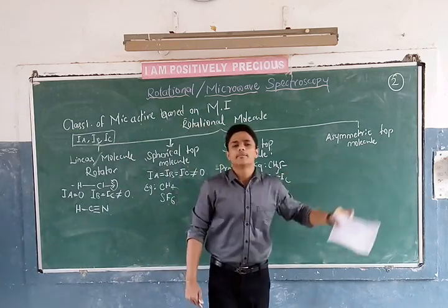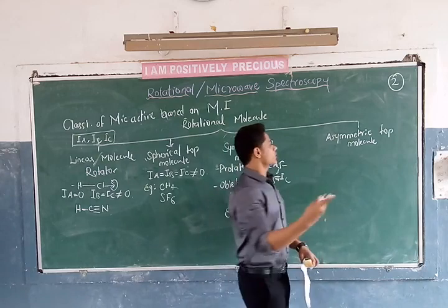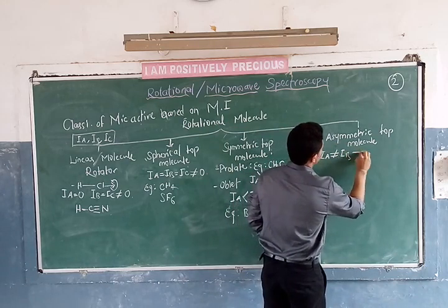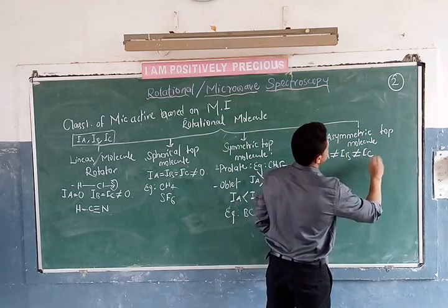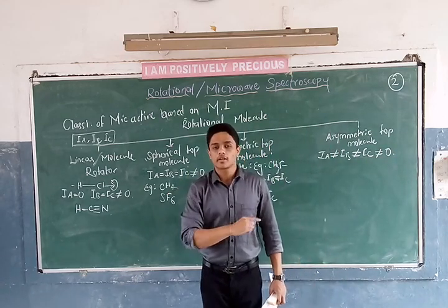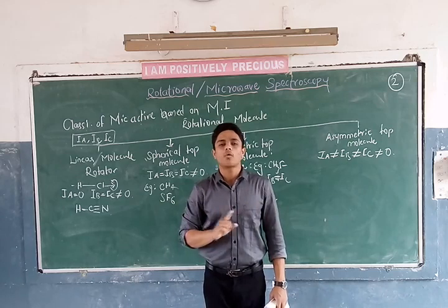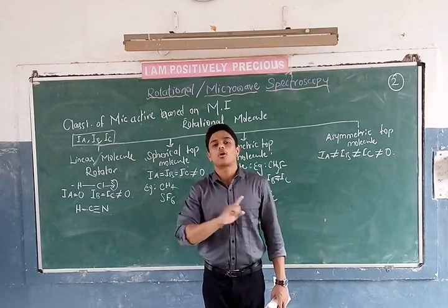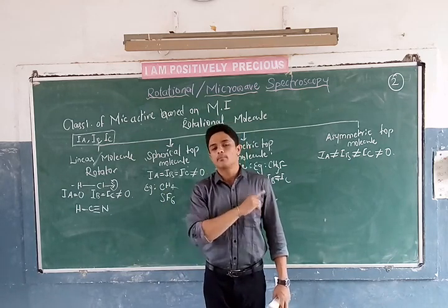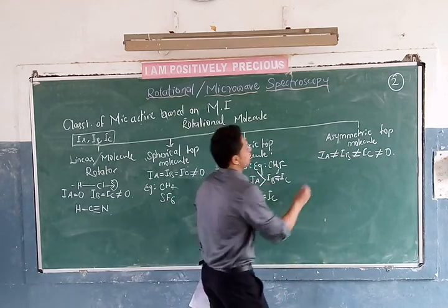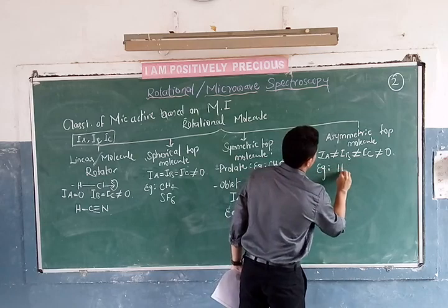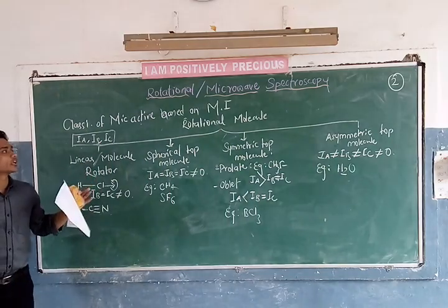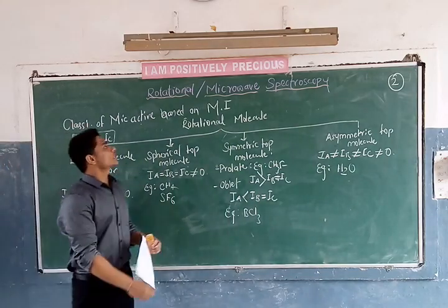Lastly, we are left with asymmetrical top molecules. For asymmetry: Ia is not equal to Ib, Ib is not equal to Ic, and all three are not equal to zero. The movement of inertia along x-axis, y-axis, and z-axis are all different, but all have specific non-zero values. The example for this kind of molecule is H2O — a water molecule. This is about the classification of microwave active molecules on the basis of moment of inertia.